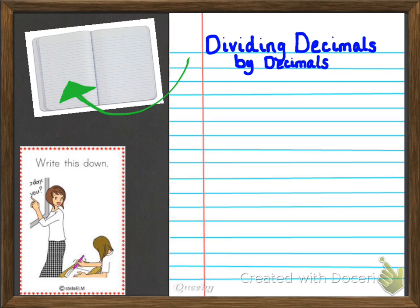So let's start our notes. Remember, you're going to start with writing the notes on the left side of your composition notebook. The title of this is Dividing Decimals by Decimals. Now remember, as you're taking notes, you're going to need to pause your video throughout so that you keep up with things.